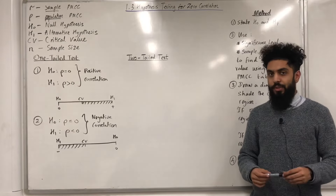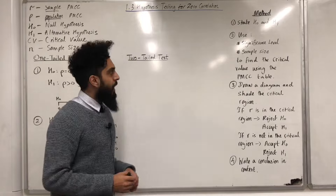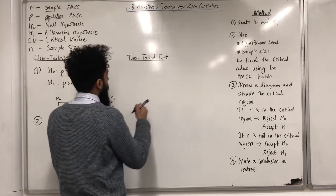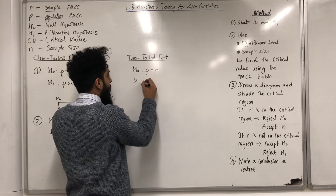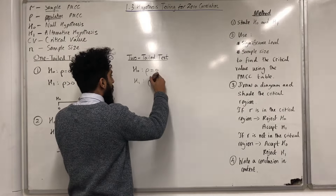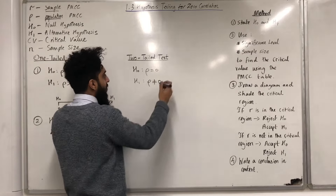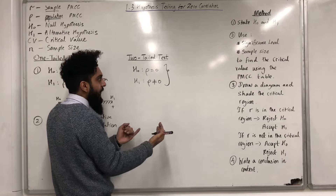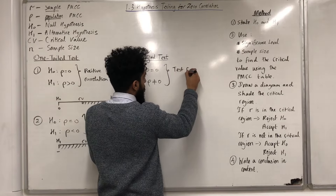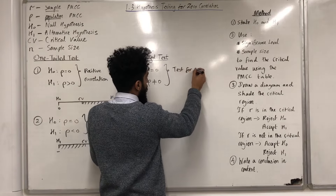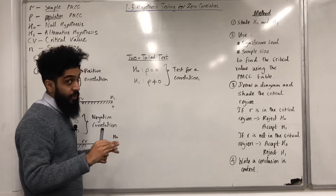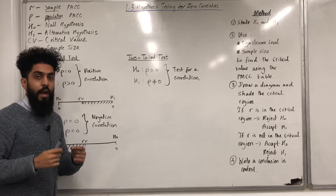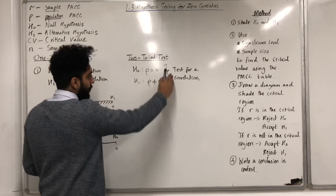Let's have a look at a two-tail test. For a two-tail test, the hypotheses will be of the following form. The null hypothesis will represent rho equal to zero. The alternative hypothesis will represent rho is not equal to zero. These are the hypotheses to test for a correlation — that correlation could be a positive or a negative correlation. Hence, we write rho is not equal to zero as our alternative hypothesis. Again, we can model this situation using a diagram.